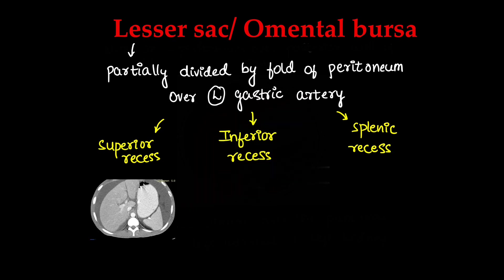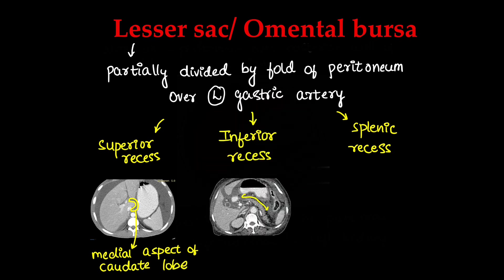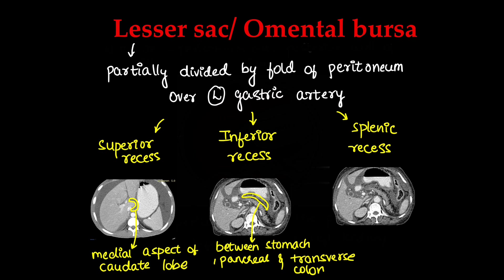On CT, the superior recess is around the medial aspect of the caudate lobe of the liver. The inferior recess is between the stomach and pancreas. The splenic recess extends from the midline to the splenic hilum, between the stomach and the splenic hilum.